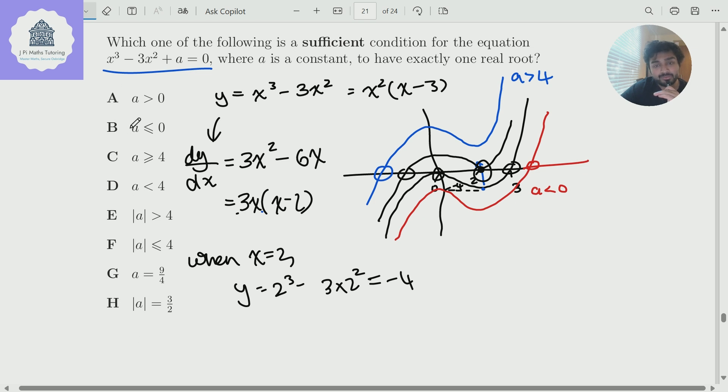Now we can just look through these options here and see which one of these is a sufficient condition for either a to be bigger than four or a to be less than zero. Well, option A is not correct, because if a is positive, that's not sufficient, because a could be one. And a being one does not satisfy the blue or the red inequality. So it's not that. Similarly, it's not B, because a would be allowed to be zero there. It's not C, because a would be allowed to be four there.